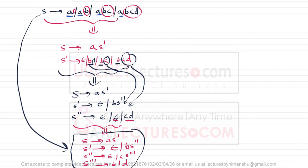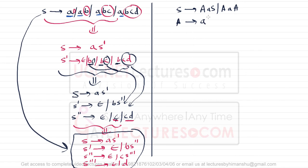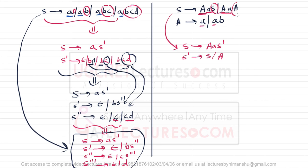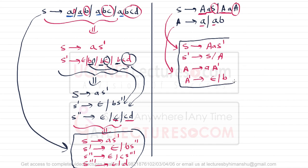Consider one more example: S → aS | aa, and A → aa | ab. In the first production, 'a' is the common prefix, so rewrite as S → aaS′ where S′ → S | a. For the second production, A → aA′ where A′ → ε | b. In this final grammar there is no left factoring.